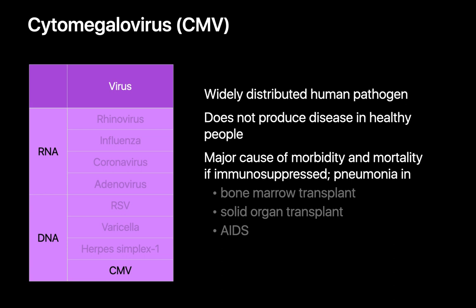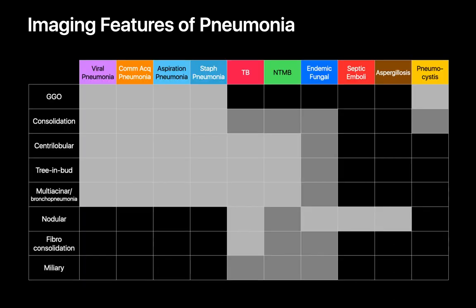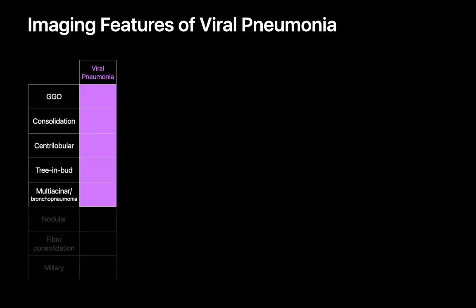Now that we've introduced you to the pathogens responsible for most viral pneumonias, it's time to talk about how viral pneumonias may appear on imaging. Let's begin with this slide from our pneumonia and lung infections talk. Remember that viral pneumonias, community-acquired pneumonias, aspiration pneumonias, and staph pneumonias all can present with the same five patterns on imaging.